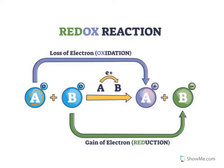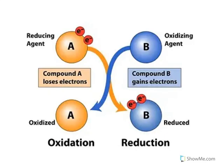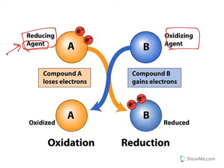Let me clarify this with an example. Suppose A and B both have an oxidation number of zero. If A loses an electron, the process is oxidation — the negative charge is lost and A gets a positive charge. Meanwhile, when B gains electrons it gets a negative charge. So the substance which lost electrons has undergone oxidation, and the substance which gained electrons has undergone reduction.